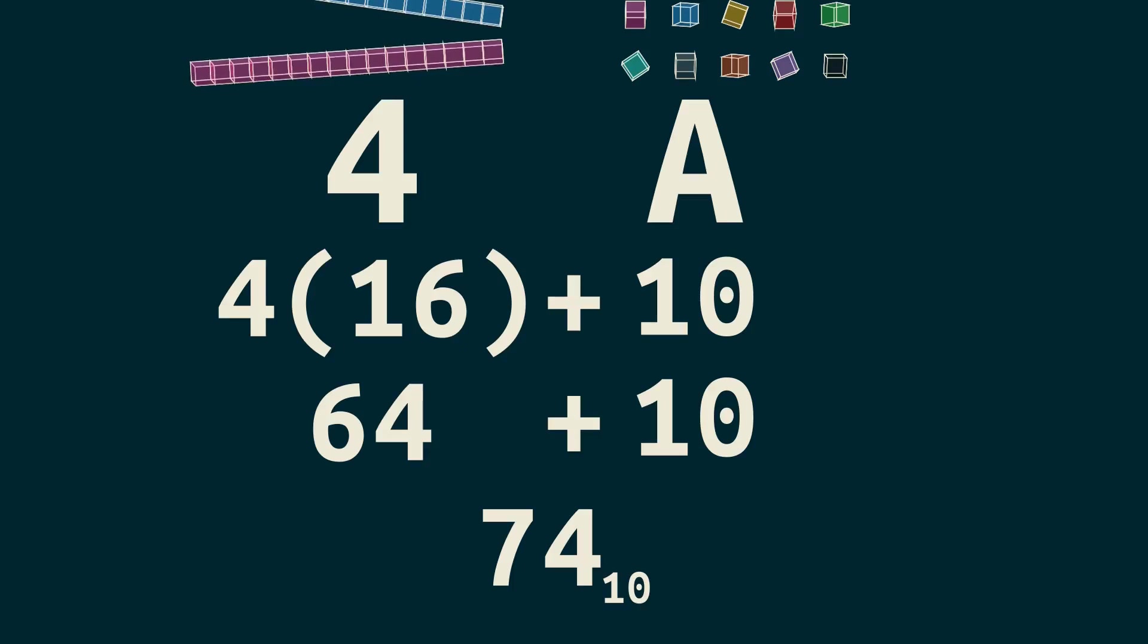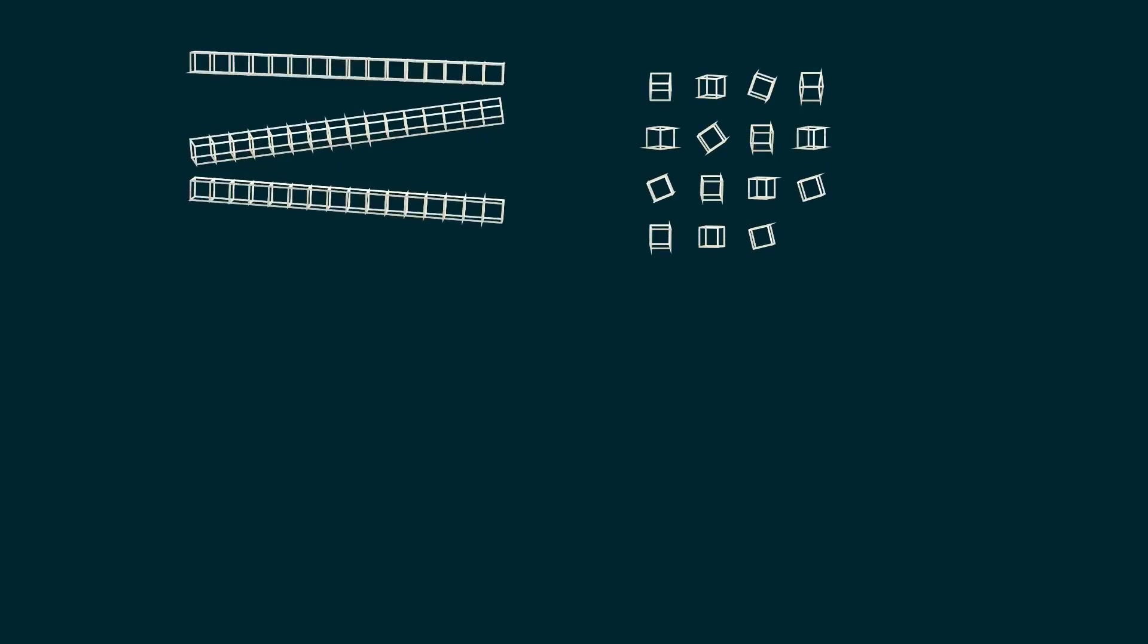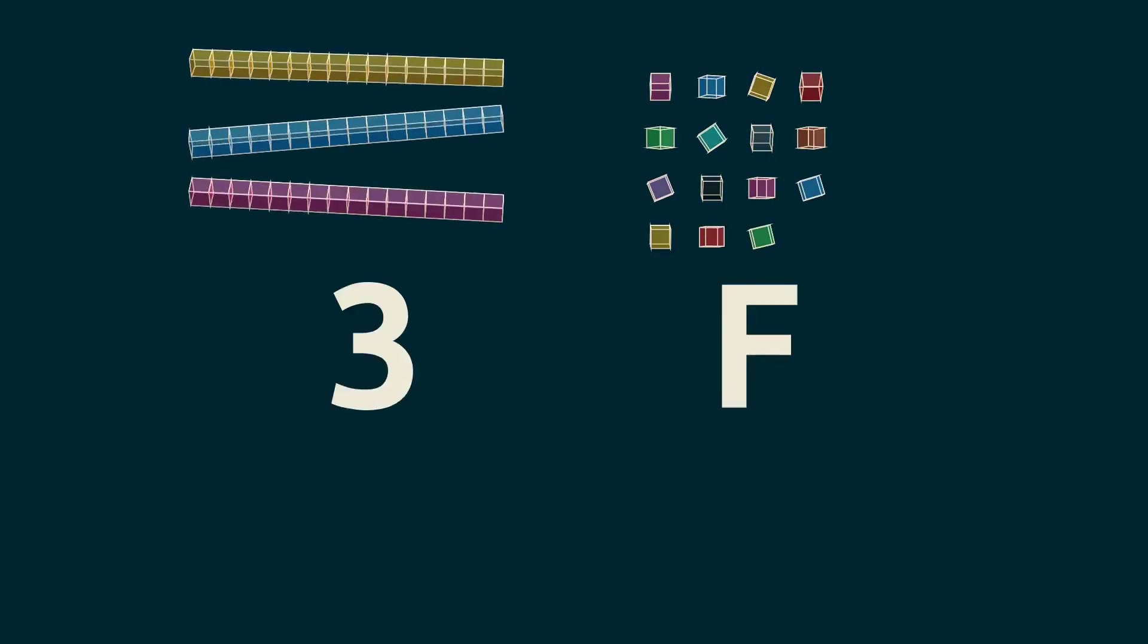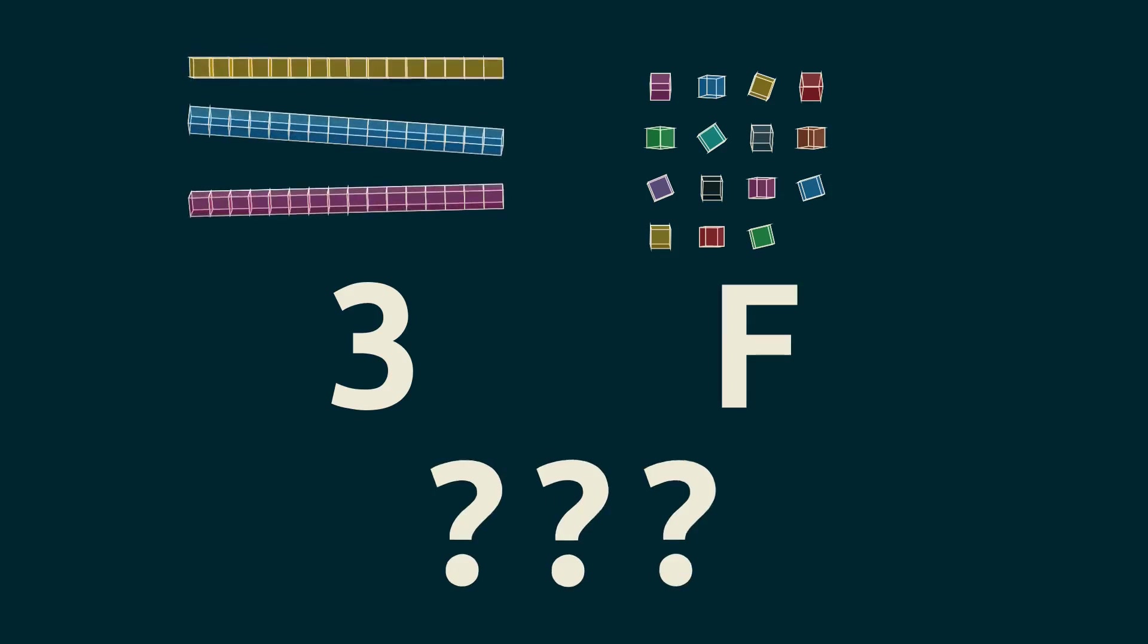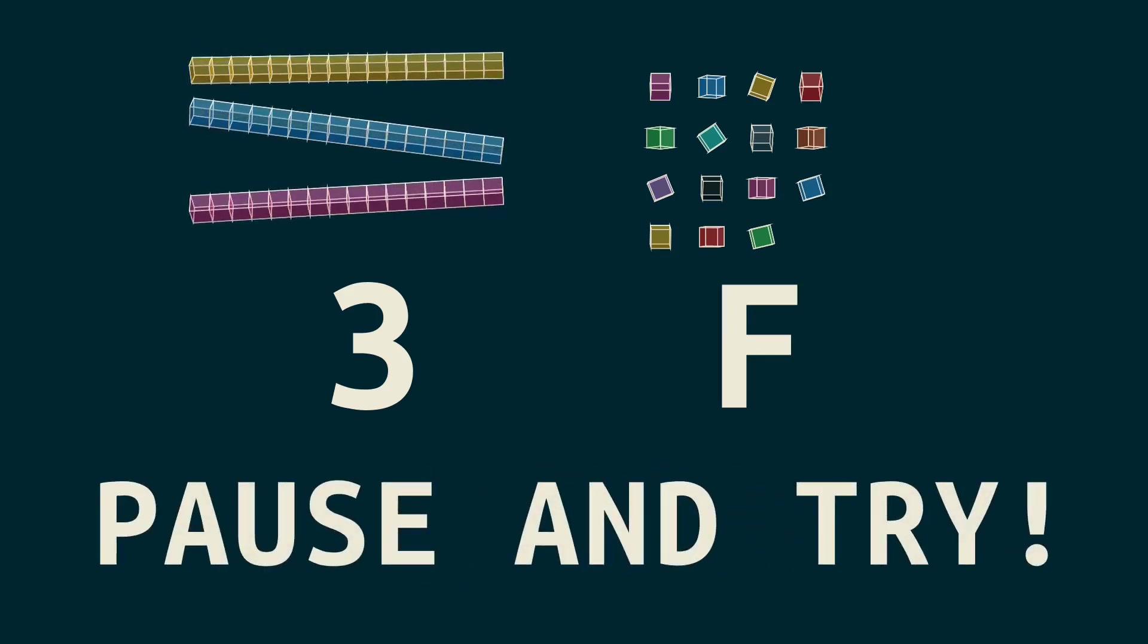So I added the little 10 here to show that it's base 10, since sometimes base 10 and base 16 numbers, that is, hexadecimal, can look the same. We can also add a little 16 for base 16 when it's unclear. So we just did 4A. What was 3F then? It's your turn to try. I'll leave the sticks and cubes up to help you out. Got it? Good.